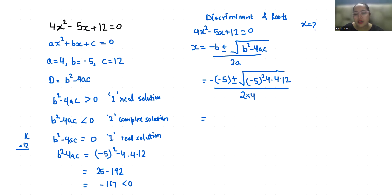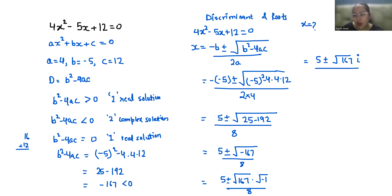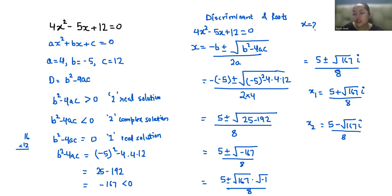So we get 5 plus or minus the square root of 25 minus 192, which is minus 167, all divided by 8. This gives 5 plus or minus the square root of minus 167 divided by 8. Therefore, x₁ equals 5 plus i times the square root of 167 divided by 8, and x₂ equals 5 minus i times the square root of 167 divided by 8. These are the two complex solutions for x.